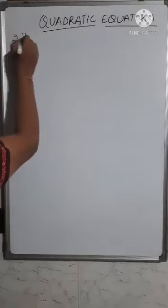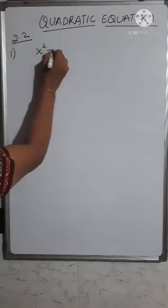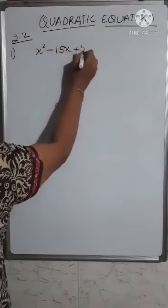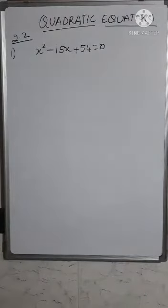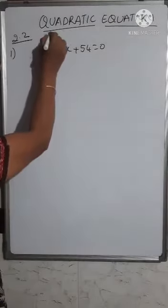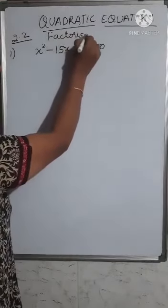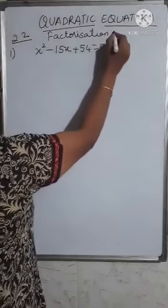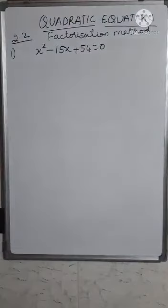Practice set 2.2, the first problem: x squared minus 15x plus 54 is equal to 0. This is a quadratic equation and you have to find its roots by the factorization method.